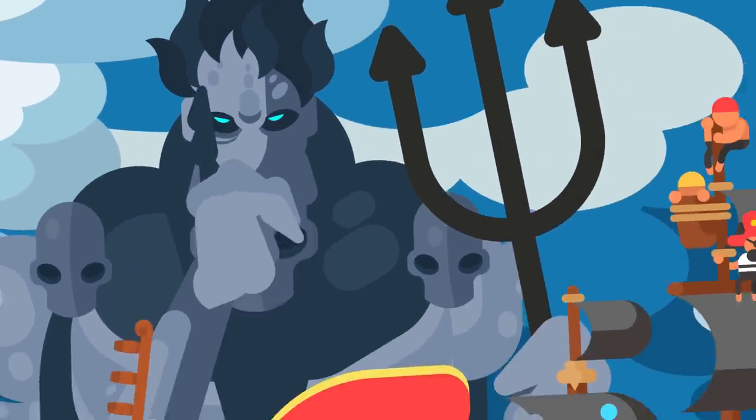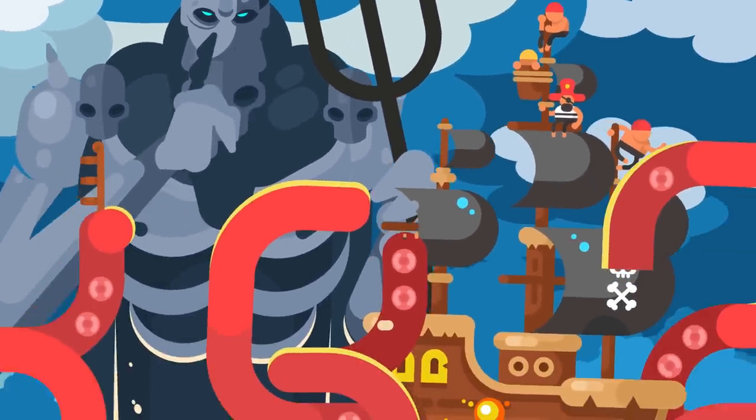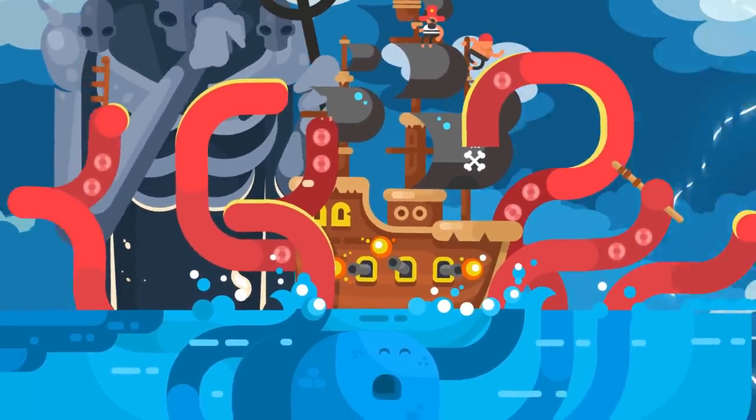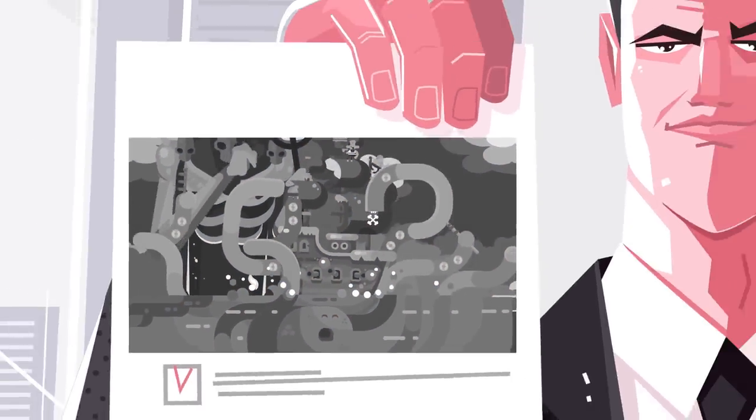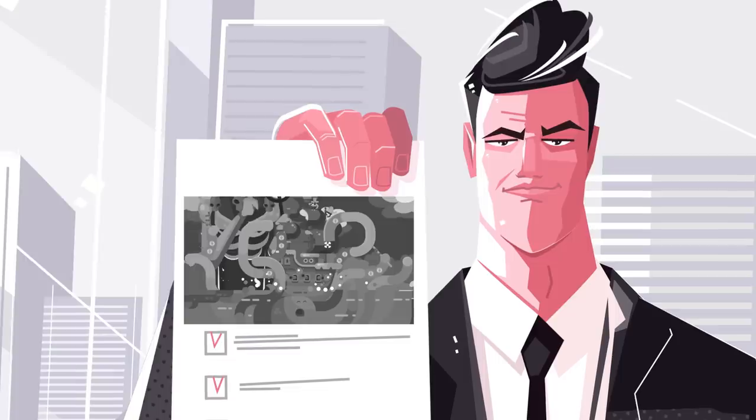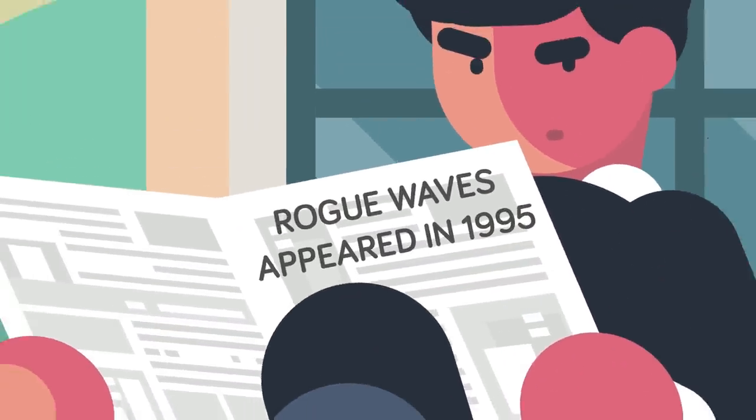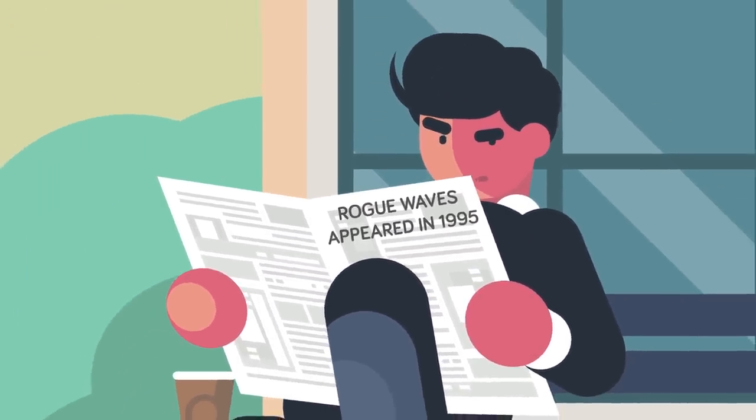Rogue waves were once on the list of fantastical explanations between Poseidon's wrath and sea monster attacks, but are now well documented as one of the many hazards ships face at sea. Only in 1995 did hard evidence of rogue waves start coming to light.